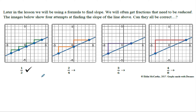Later in the lesson we'll use the formula y2 minus y1 over x2 minus x1. We often get fractions that need to be reduced. The question shows four attempts at finding slope of the same line — can they all be correct? We found slope was one-half. If you pick farther apart points, you get two-over-four, three-over-six, or four-over-eight, all of which simplify to one-half. On any line, it doesn't matter which two points you pick, but your answer must be in simplest form. Slope will be a whole number or a fraction, not a mixed number.